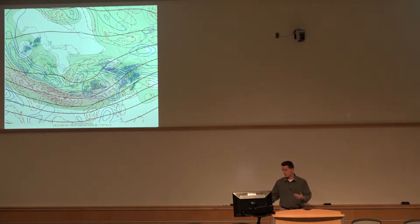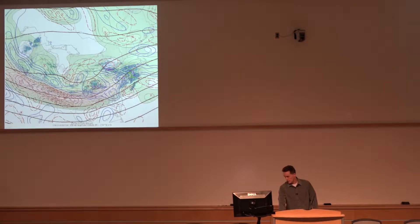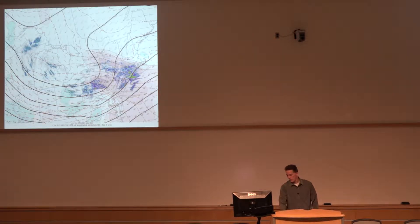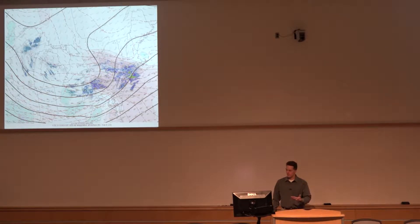The other term in this same case is differential cyclonic vorticity advection shown in blue — this is straight from the SPC mesoanalysis page. There's differential CVA downstream of the shortwave trough, no big surprise. In the same area, we have low-level warm advection maximized, and the precipitation echoes are in the zone where the warm advection and the differential cyclonic vorticity advection overlap. This is pretty typical.